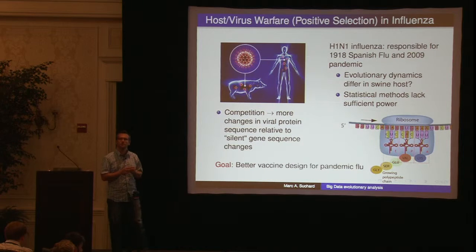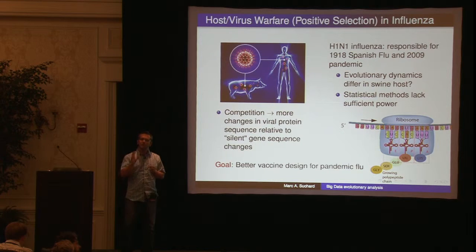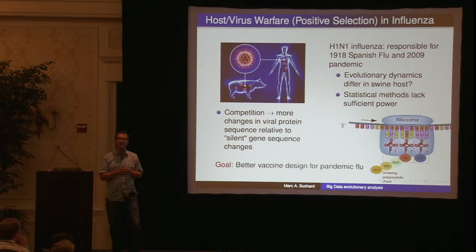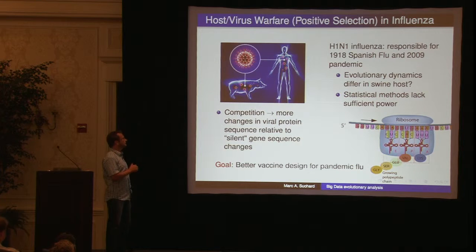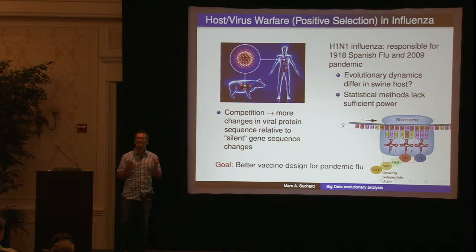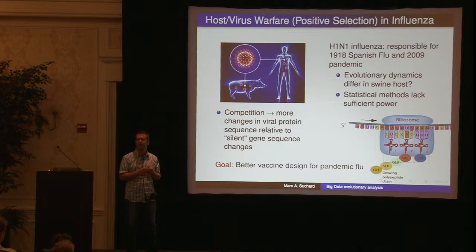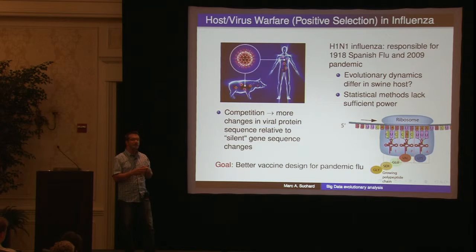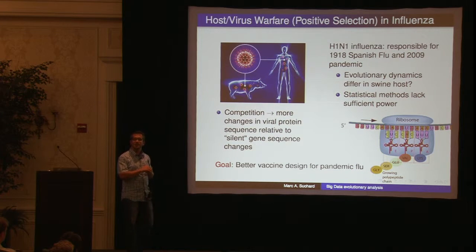I'm briefly going to explain the underlying concept of the test we're trying to construct, and then work through how we might scale up existing estimators in order to do this. Genetic material basically exists in two different levels of hierarchy. There's the raw nucleotides — adenine, guanine, thymine — that in the flu range at about 10,000 characters long.